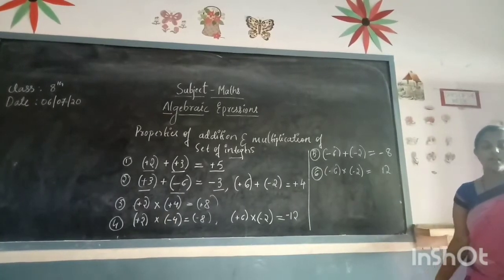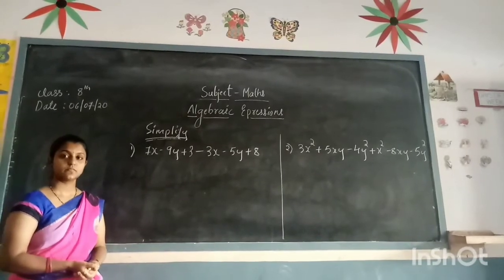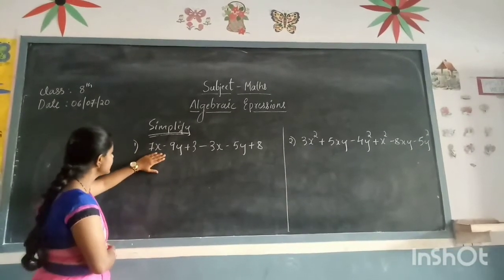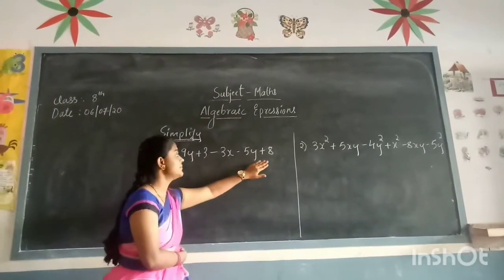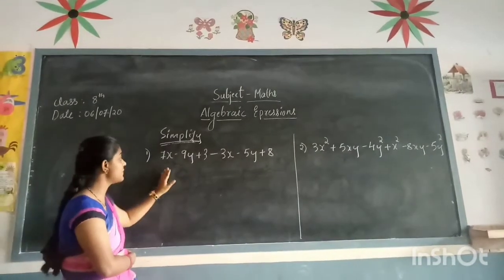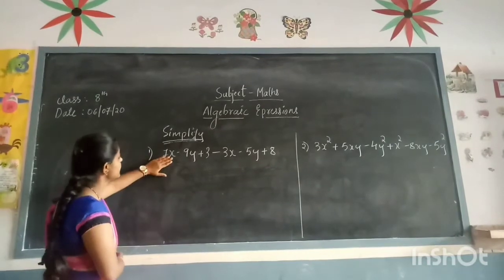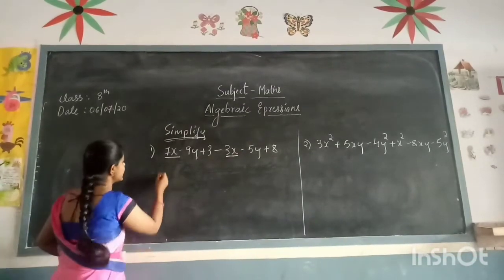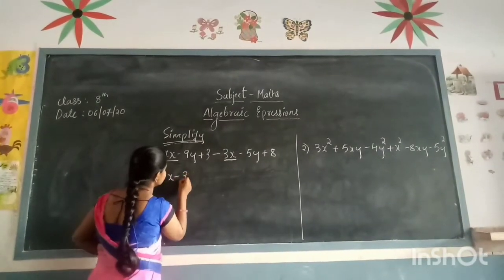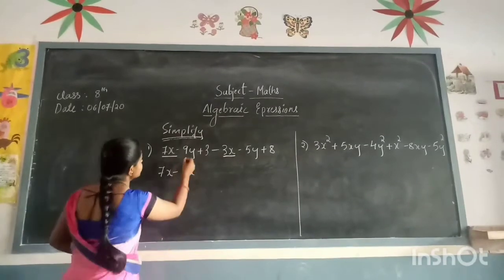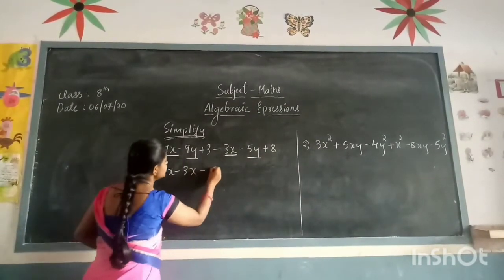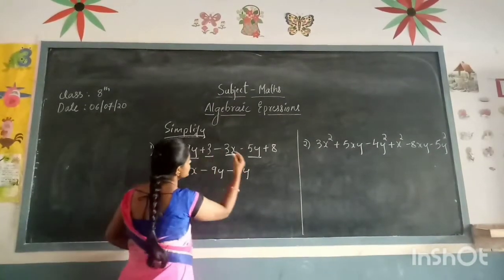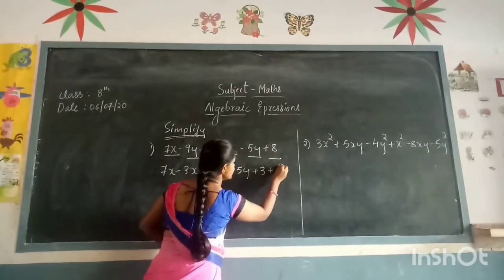Now let us simplify some exercise problems. The first question: simplify 7x minus 9y plus 3 minus 7x minus 5y plus 8. Wait — it should be 7x minus 9y plus 3 minus 3x minus 5y plus 8. To simplify, first combine all the like terms. The like terms for x are 7x and 3x. Then we have the y terms: minus 9y and minus 5y. And the constants are plus 3 and plus 8.